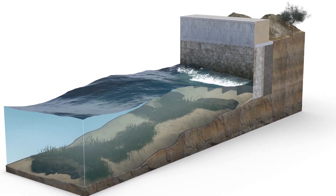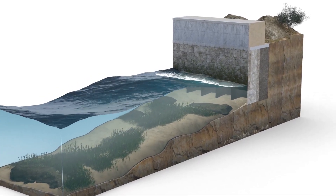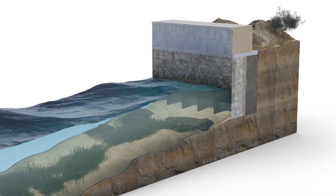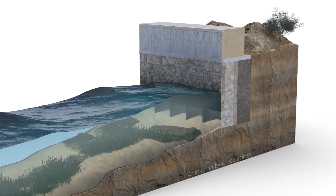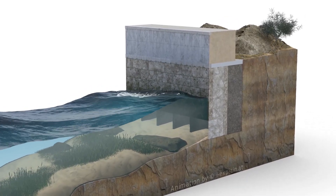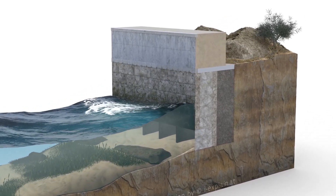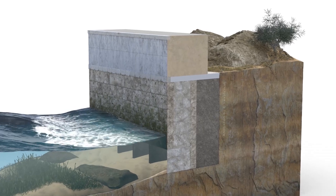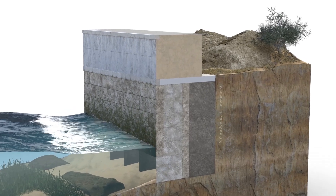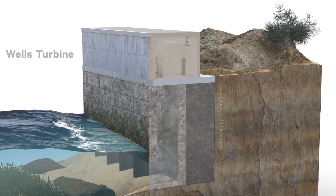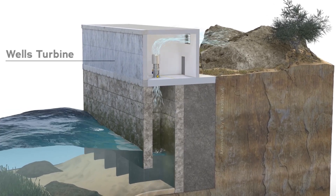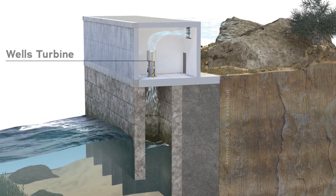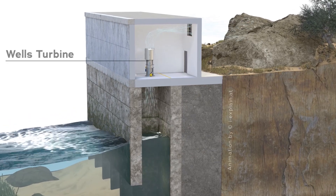One concept for harnessing wave energy is the oscillating water column principle. The power takeoff for this technology is typically an air turbine. The most commonly used air turbine for this application is the Wells turbine, which we will explain in this episode.